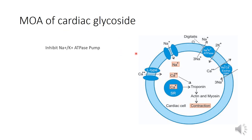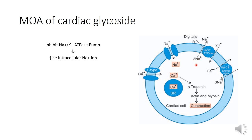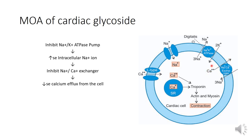Our drug, cardiac glycoside, inhibits this sodium-potassium ATPase pump. Due to this inhibition, intracellular sodium ion levels increase. This increased intracellular sodium ion then inhibits the sodium-calcium exchanger, because there is an elevated level of sodium ion present. As a result, the efflux of calcium ion decreases — the calcium ion is not moved out of the cell — leading to an increased concentration of intracellular calcium ion.